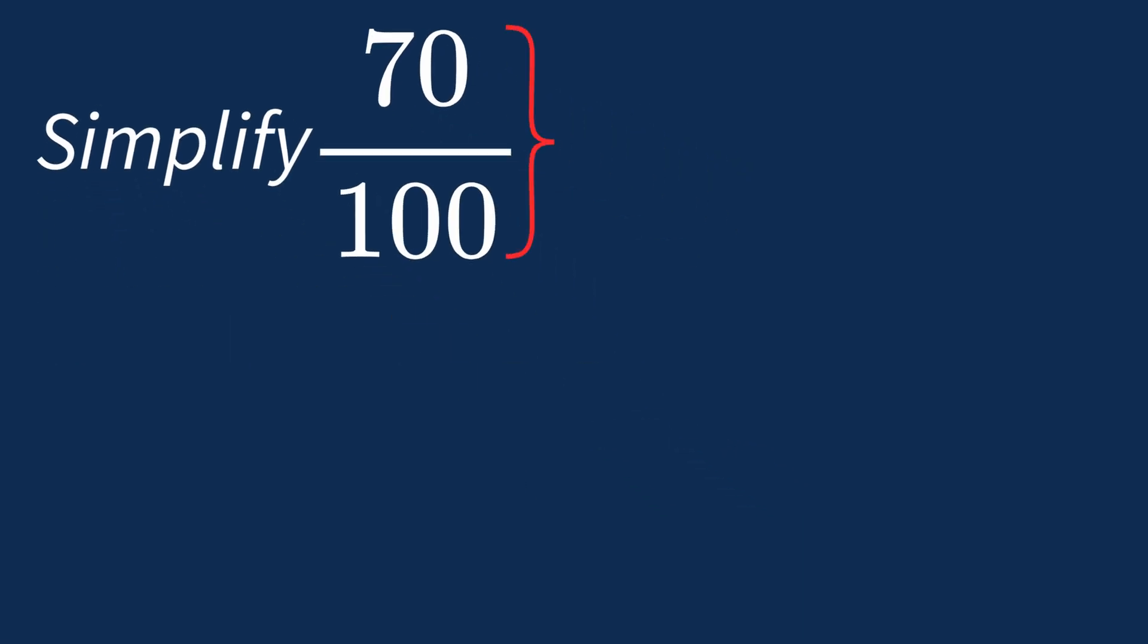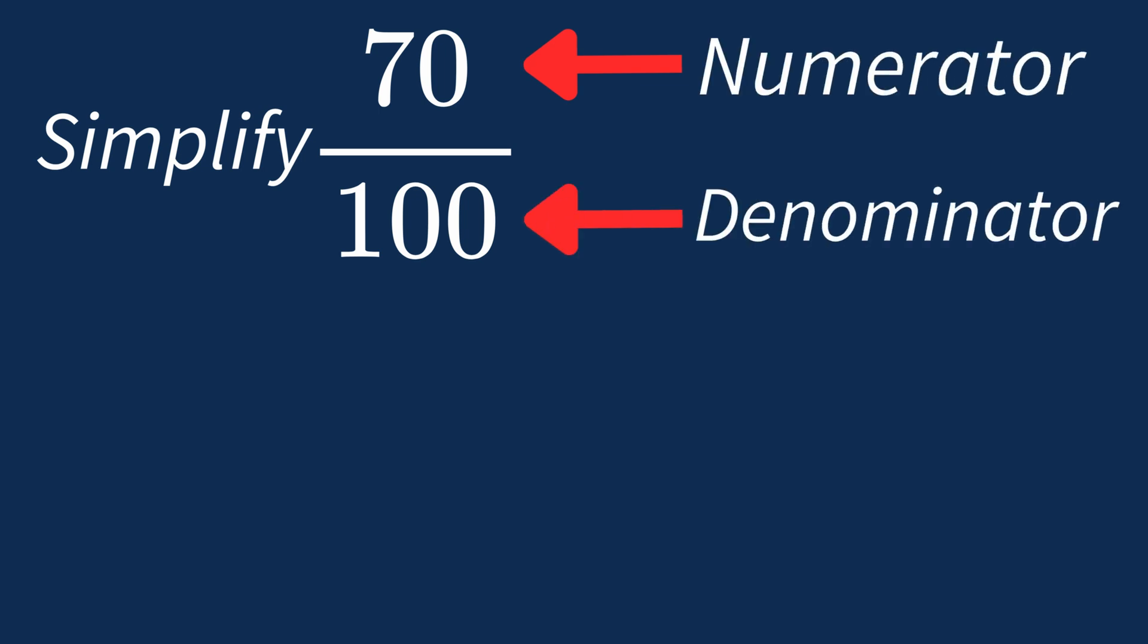To simplify 70 over 100, we need to look for the common factors between the top number, the numerator, and the bottom number, the denominator. First, let's list out the factors for each.